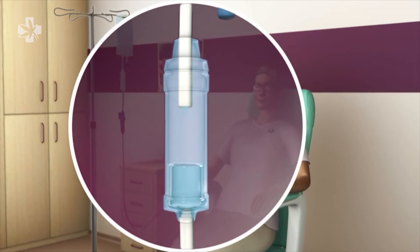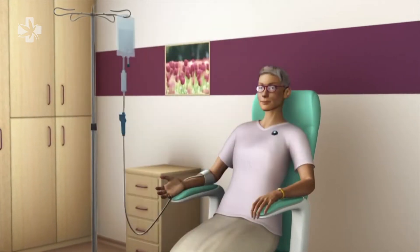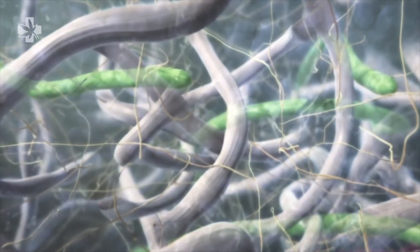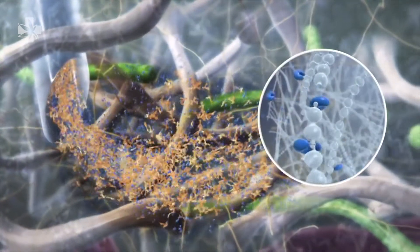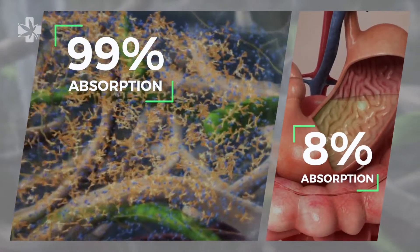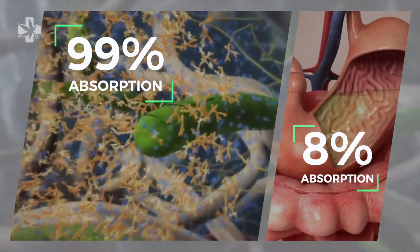Intravenous vitamin drips are injected directly into the bloodstream. Our bodies can absorb 99% of vitamins injected by IV, compared to only 8% of absorption for vitamins ingested orally.